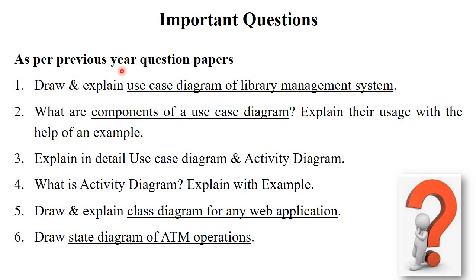As per previous year question papers, questions asked include: draw and explain the use case diagram of a library management system (7-8 marks); what are the components of a use case diagram — explain their usage with an example; explain in detail the use case diagram and activity diagram (covering definition, application, components, and example diagrams); what is an activity diagram — explain with example; draw and explain a class diagram for any web application; and draw the state diagram of ATM operations. These questions are generally asked for seven to eight marks, so you must prepare all types of diagrams with examples.